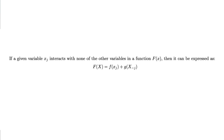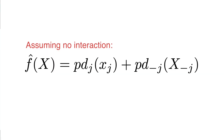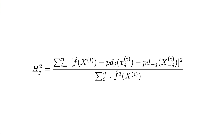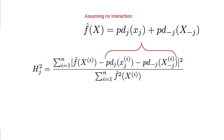We can extend this idea to understand if a feature interacts with any other feature in the model — we call this the overall H-stat. If a given variable xj interacts with none of the other variables, the function can be expressed as the sum of two functions: one of xj and one of all variables excluding xj. So if xj does not interact with any other features, we can write the prediction function as the sum of two PDs. To calculate the overall H-stat, we compare the prediction function to the prediction function under the assumption that xj does not interact with any other features. If this assumption is true, the H-stat will be 0; if xj only affects predictions through interactions, we'll have a value of 1.